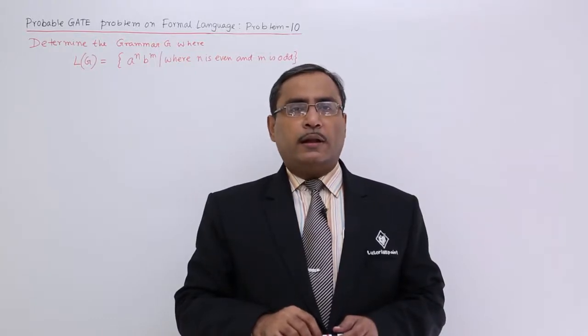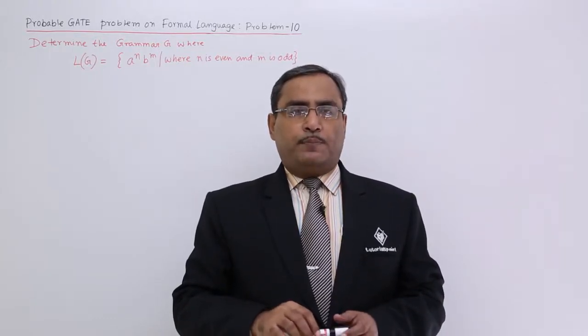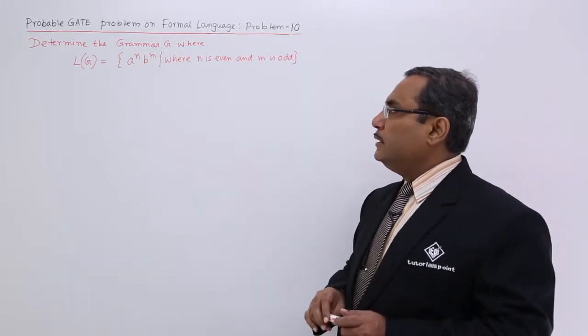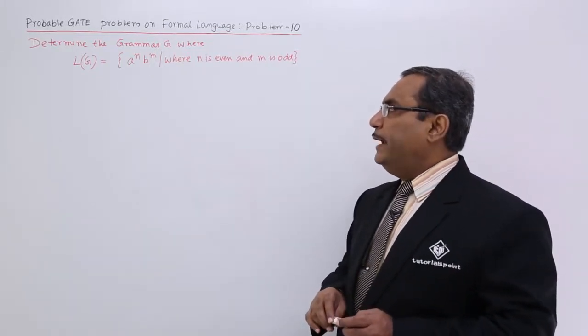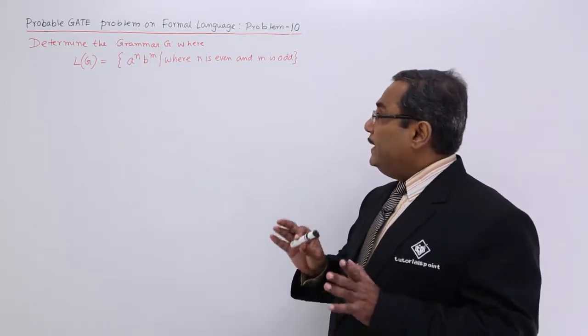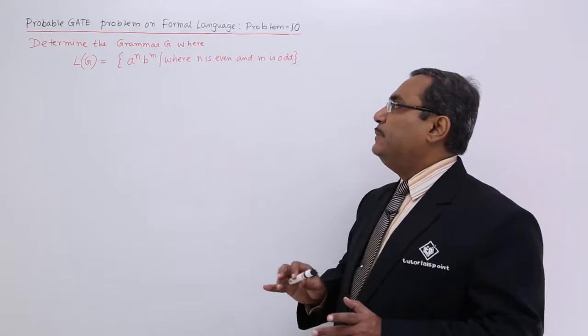Another problem on formal language. The problem here is like this. Determine the grammar g where l of g is equal to a to the power of n b to the power of m, where n is even and m is odd.